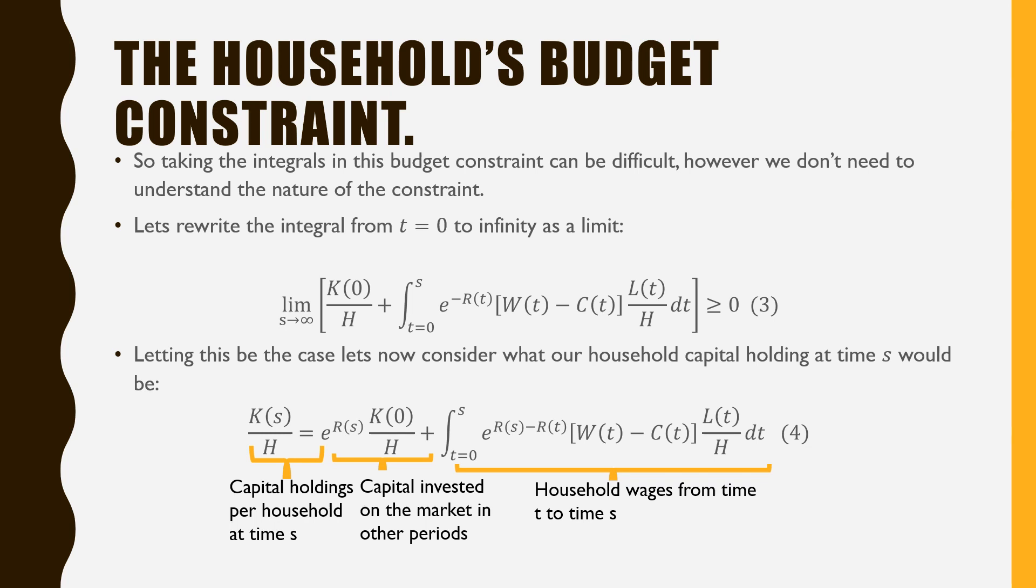Taking the integral in this budget constraint can be difficult. However, we don't need to understand the nature of the constraint. Let's rewrite the integral from t equals zero to infinity as a limit. The limit as s goes to infinity is K(0)/H, which is our initial capital holdings, plus the integral from t equals zero to s of e^(-R(t)) times [W(t) - C(t)]L(t)/H, must be greater than or equal to zero.